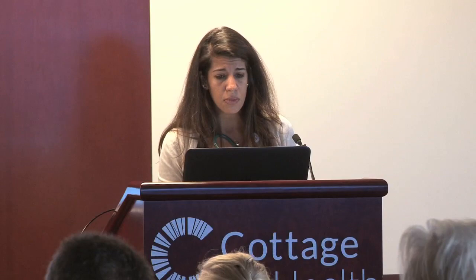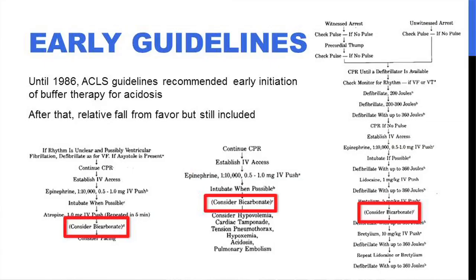In all the early guidelines, sodium bicarbonate featured fairly heavily until about 1986, at which point the AHA backed away fairly strongly but still included it in all of these guidelines. You can see the asystole algorithm, the PEA algorithm, and the VFib algorithm.